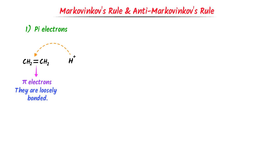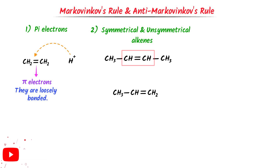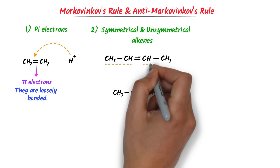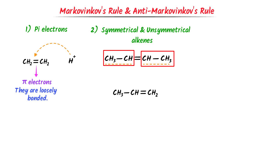Secondly, understanding symmetrical and unsymmetrical alkenes. Consider these two alkenes. In this alkene, we can see the double bond. At the left-hand side of the double bond, there are CH and CH3, while at the right-hand side of the double bond, there are also CH and CH3. At both sides of the double bond, there are the same species. We call such alkenes symmetrical alkenes.